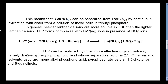Tributyl phosphate forms complexes with lanthanide nitrate ions in the presence of nitrate ions. The equation is: Ln³⁺ + 3NO₃⁻ + 3(tributyl phosphate) → Ln(NO₃)₃·3(tributyl phosphate). This is a reversible reaction.